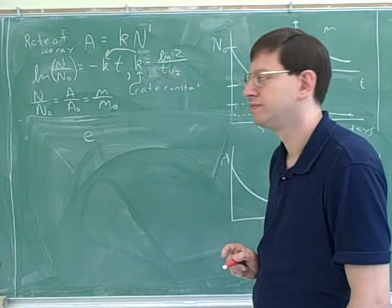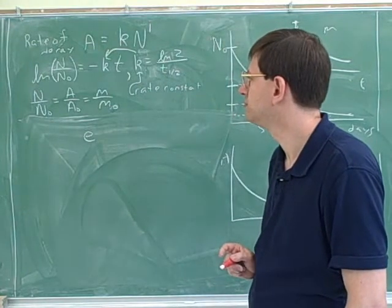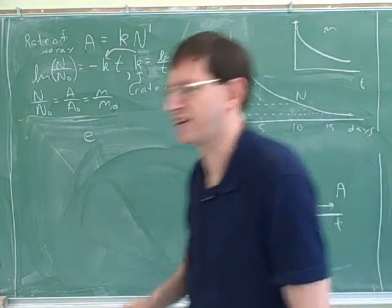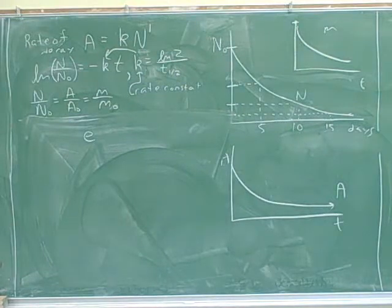Is that e to the n over n₀? Let's check your notes. That would be this up here. So it's going to be e to the n over n₀ equals... oh no no no, it's going to be...